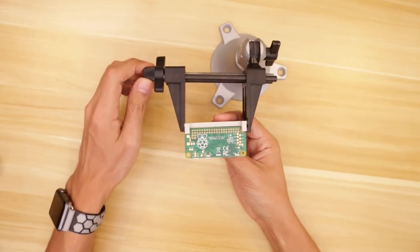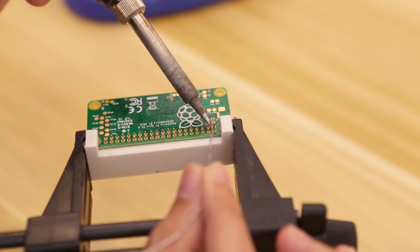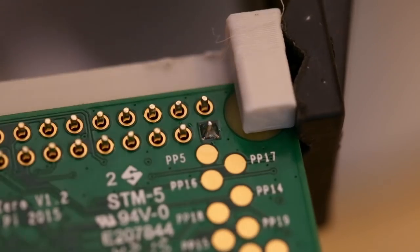Once the male headers are fixed in place, we can secure the jig to a panavise. You'll have to solder each pin from the bottom of the Pi.